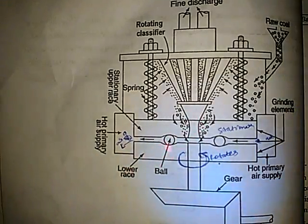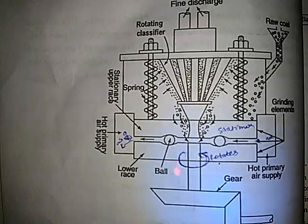So the upper race is stationary and the lower race is rotated by the bevel gear. The bevel gear is coupled to the motor so that the rotation creates the motion.